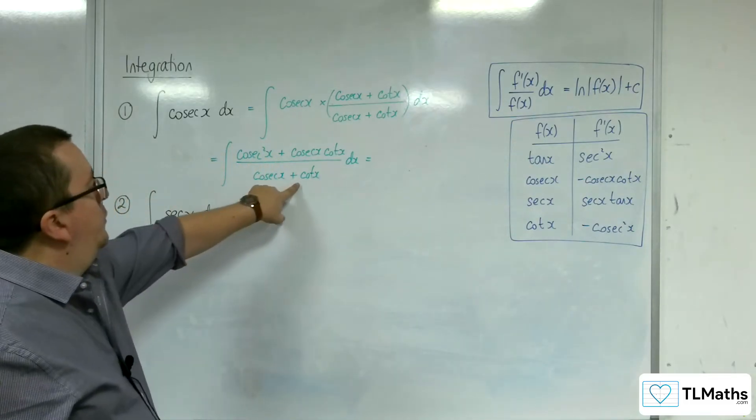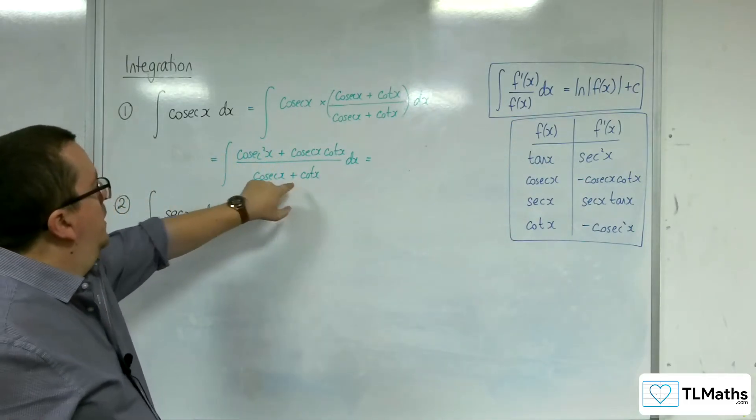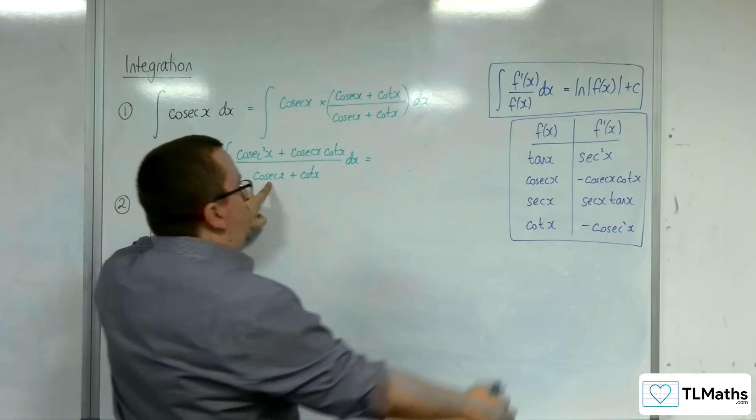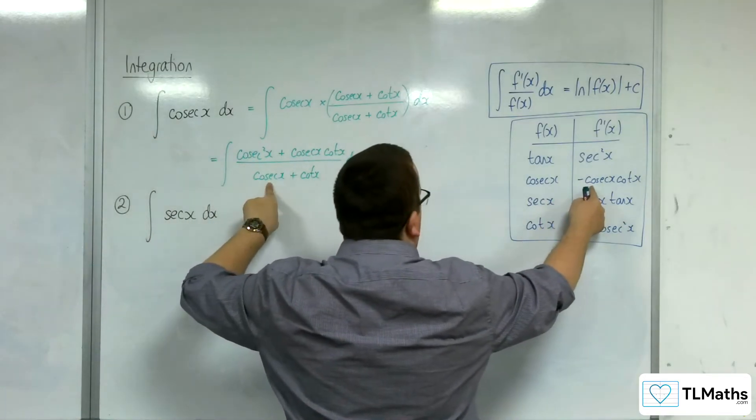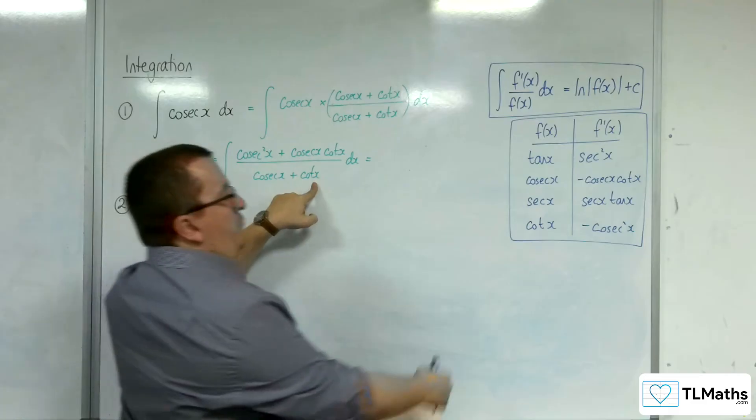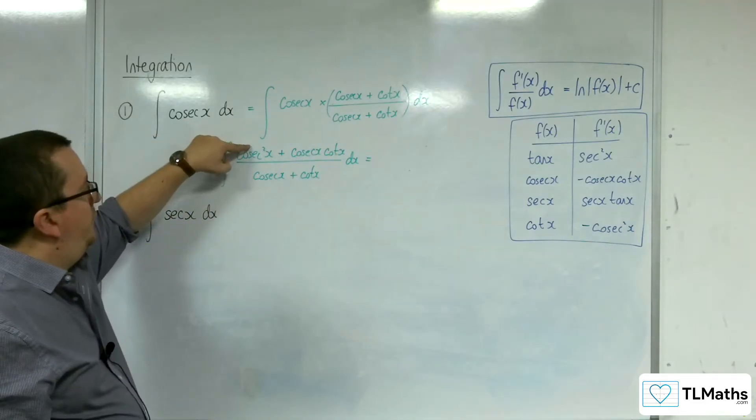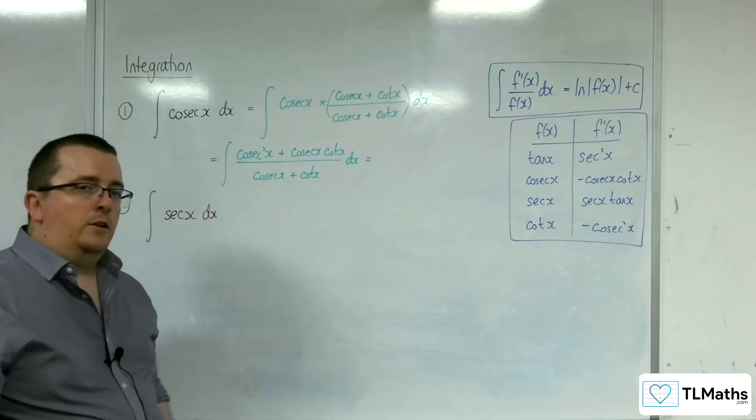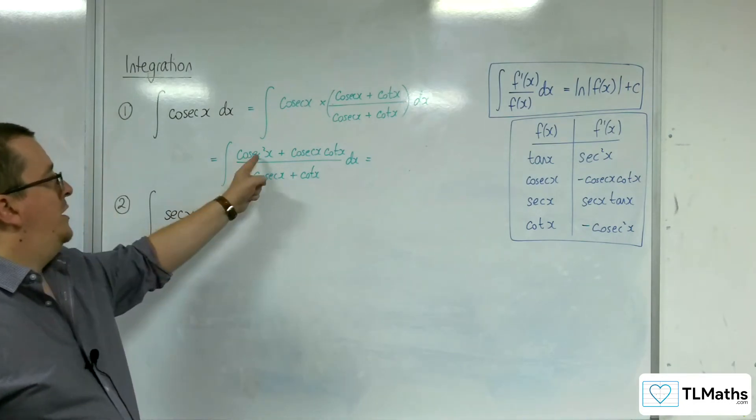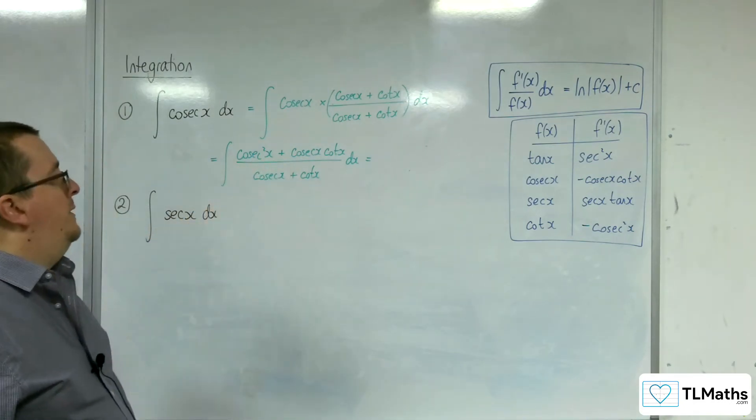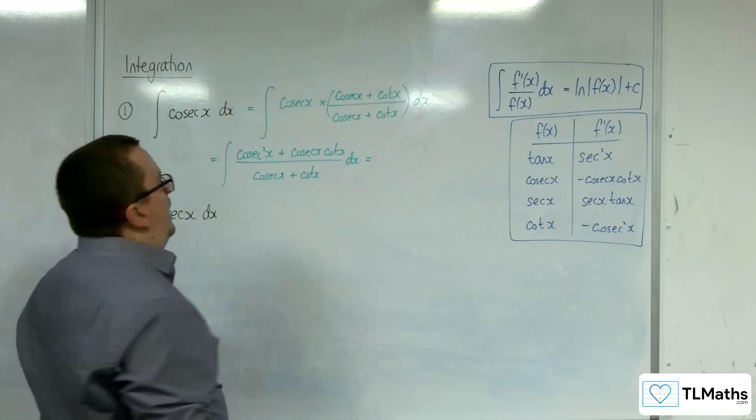Now, this is where this rule comes in. So when you look at the denominator, you've got cosec plus cot. Cosec differentiates to minus cosec cot, and cot differentiates to minus cosec squared. We've got the cosec squared, we've got the cosec cot, it's just we've actually got positives in the top, in the numerator.